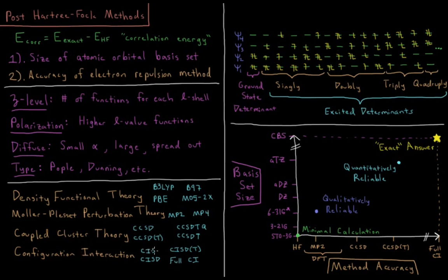Things like CI doubles or CI singles, CI singles and doubles, CI singles, doubles, and perturbative triples, depending on how many excited determinants they use. If you excite the electrons all the way up to the total number of electrons, then you're using what's called full CI, which is actually the exact solution to this problem. So the exact energy here is actually the full CI energy in a complete basis set.